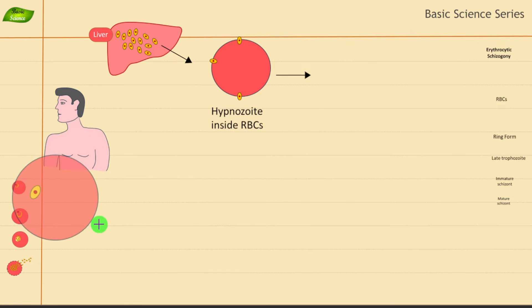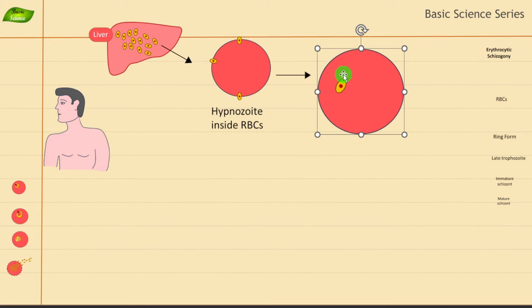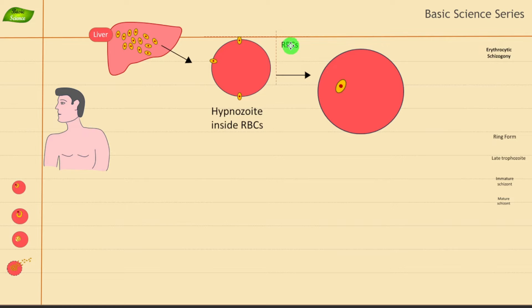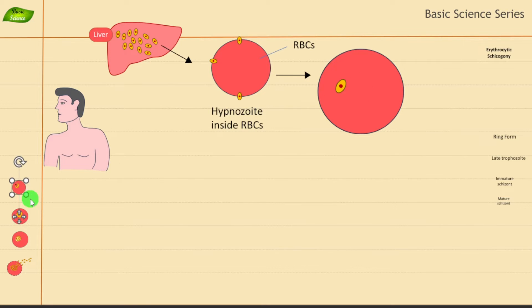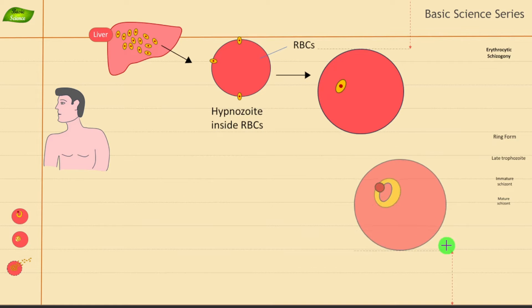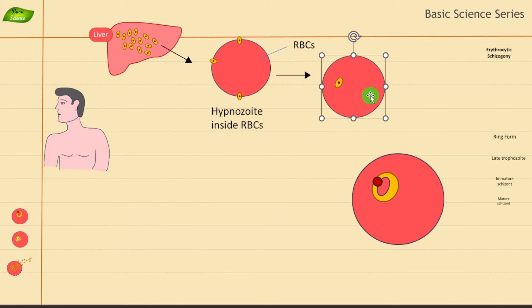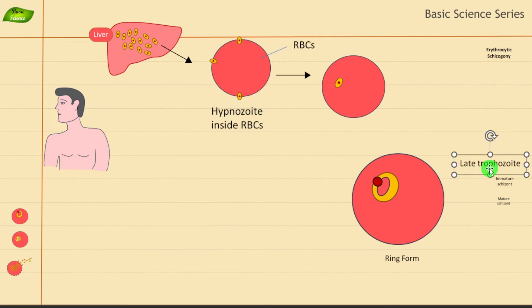Now let's move on to the second stage. Once inside the RBC, we can label this as the RBC. In the erythrocytic stage, once inside the erythrocyte, the merozoite develops into the trophozoite stage. It will first form the ring stage — the early trophozoite — and then a late trophozoite stage.